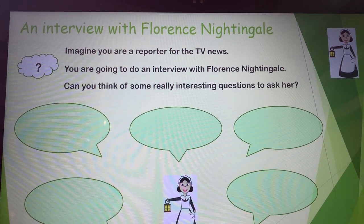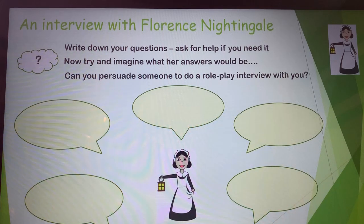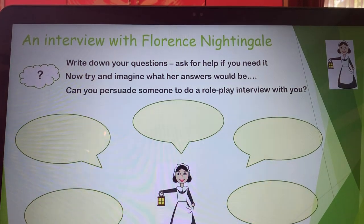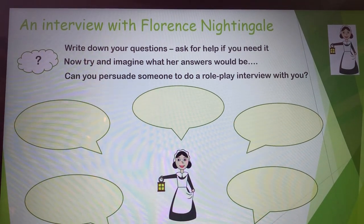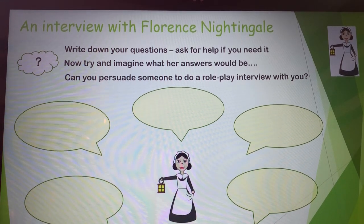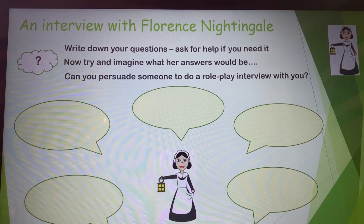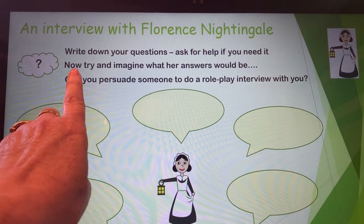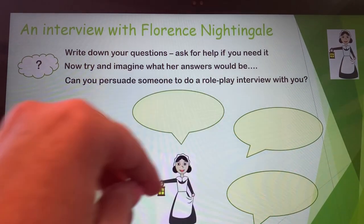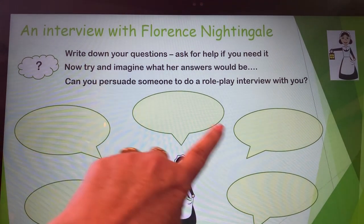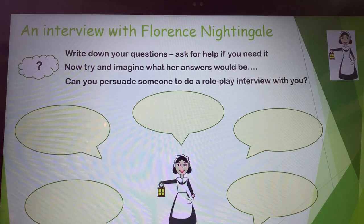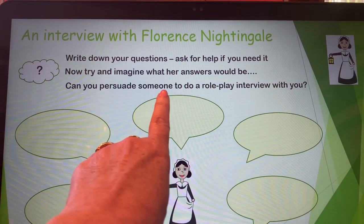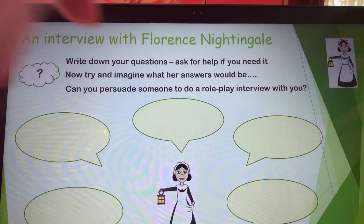On the next page I've asked you to write down your questions. Ask for help if you need it — maybe someone at home can help with spelling, or write them out for you so you can copy them in your best writing. Then try to imagine what her answers would be and have a go at writing down what you think Florence's answers to your questions would be. When you've got those good questions and interesting answers, can you persuade someone to do a role play interview with you?